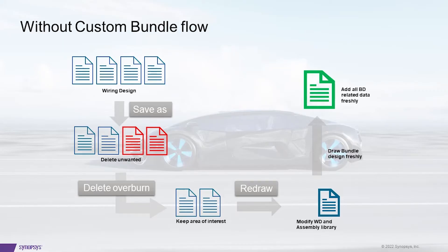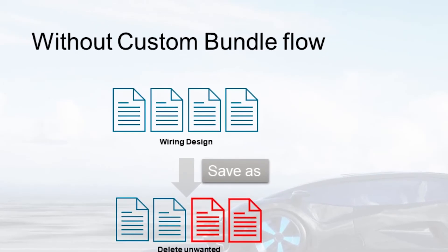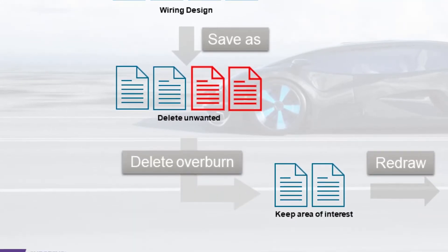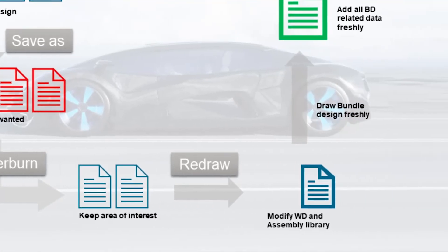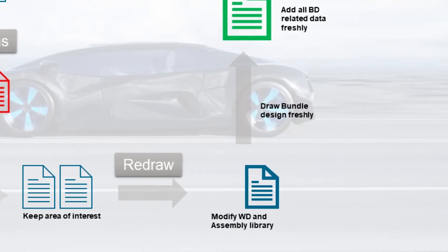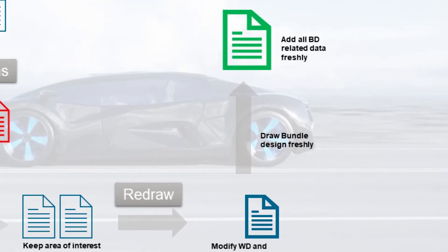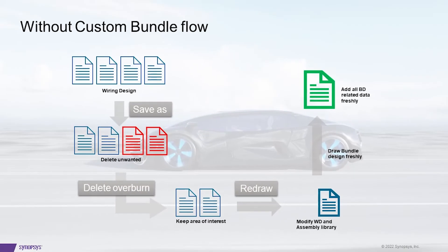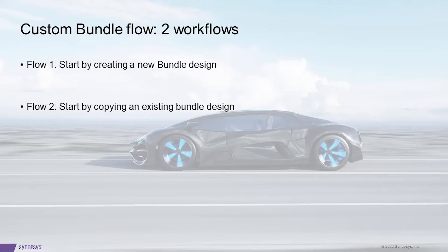Without Custom Bundle Workflow, when a quick design change is needed, one will have to first make a save-as of the existing wiring design, then delete the unwanted data from the wiring design, keep the area of interest in the wiring design, make the necessary changes to the assembly library and also to the data in the wiring design, then import the data in the connected bundle design and add the bundle design specific items. This might be a cumbersome process, and Custom Bundle can make this simple.